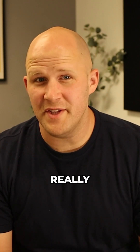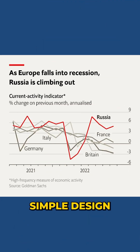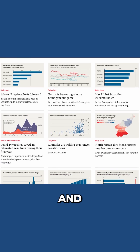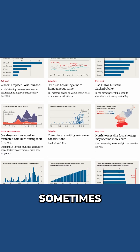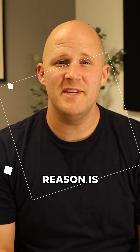The first reason is that all their charts are really simple. Simple colors, simple sans-serif font, simple design. And the chart type is actually pretty simple too — line charts, bar charts, and column charts. Sometimes a map, sometimes a scatter plot.